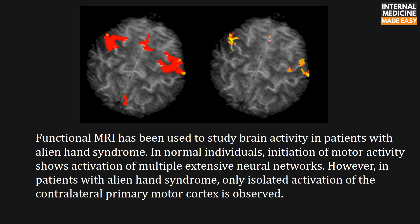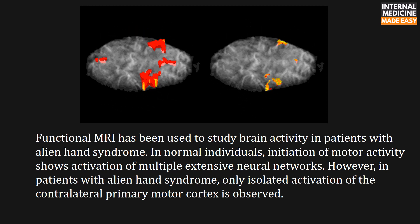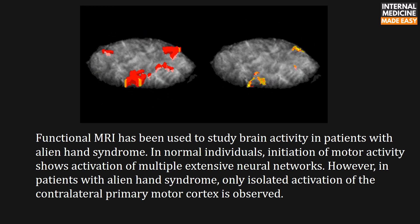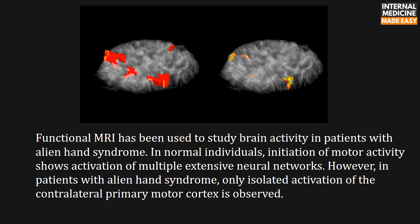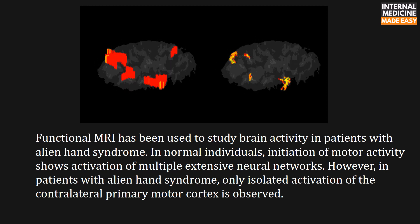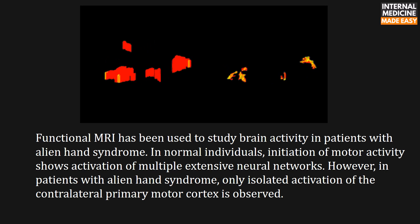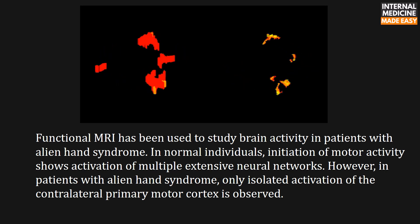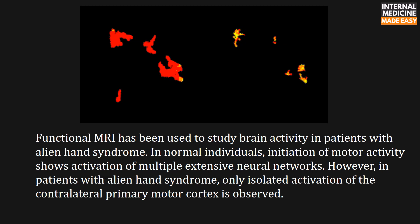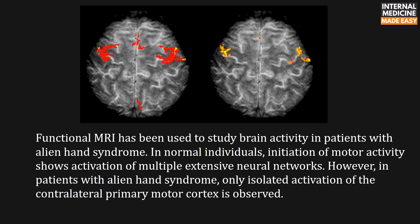Functional MRI has been used to study brain activity in patients with alien hand syndrome. In normal individuals, initiation of motor activity shows activation of multiple extensive neural networks. However, in patients with alien hand syndrome, only isolated activation of the contralateral primary motor cortex is observed.